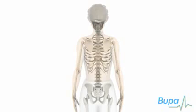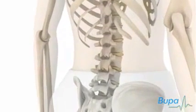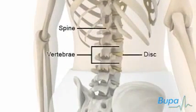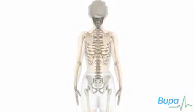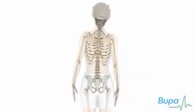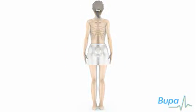Scoliosis is a condition in which the spine curves sideways, and idiopathic scoliosis means that the cause isn't known. The spine is made up of many small bones called vertebrae, separated by discs which allow the spine to bend. This structure of vertebrae and discs is supported along its length by muscles and ligaments.